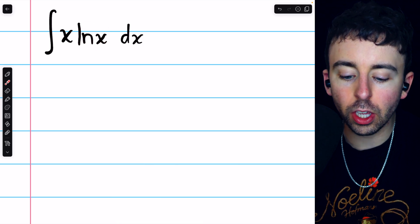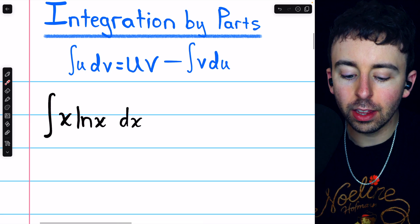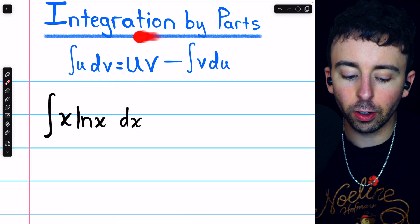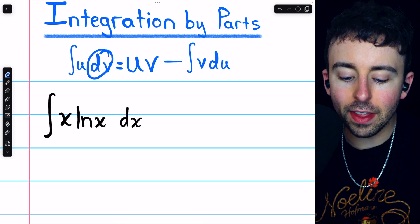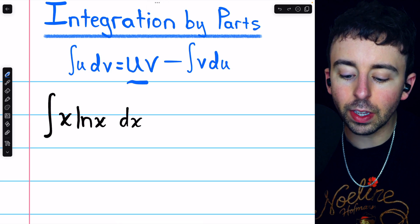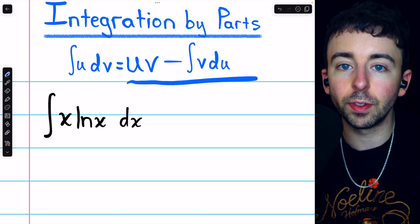So, to integrate this, we will use integration by parts, the formula for which I've written here. We'll have to select a u and a dv, and then the integral will be uv minus the integral of v du.